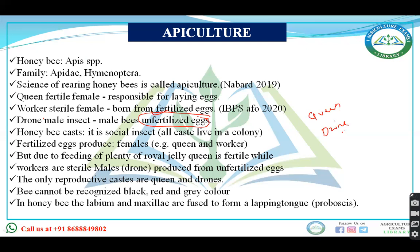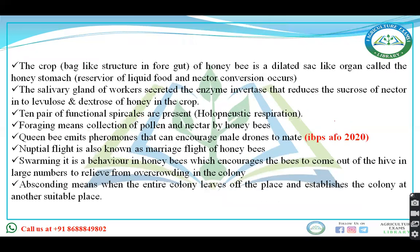In honey bee, the labium and maxilla are fused to form a lapping tongue. The crop is a bag-like structure in the foregut of the honey bee, called the honey stomach, which is the reservoir of food where nectar conversion occurs. The salivary gland of the worker honey bee secretes the enzyme invertase, which reduces the sucrose of the nectar into fructose and dextrose of honey.